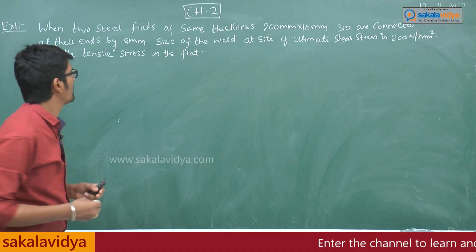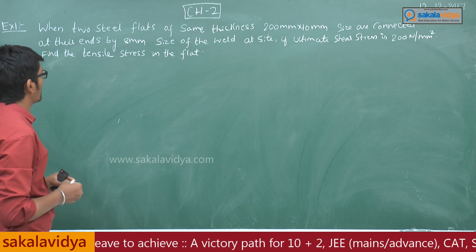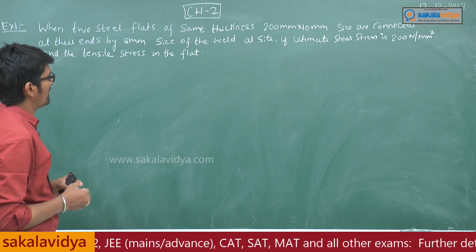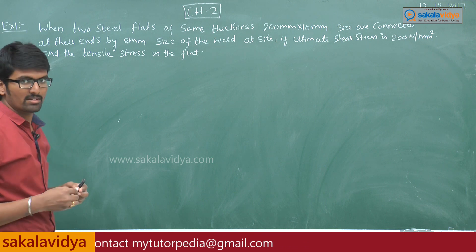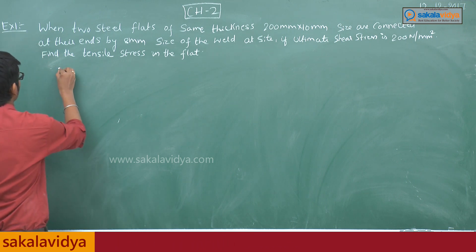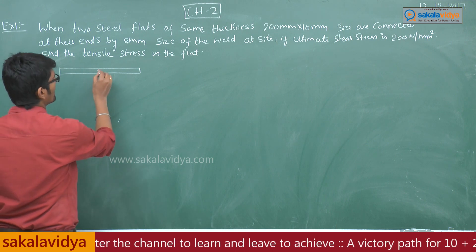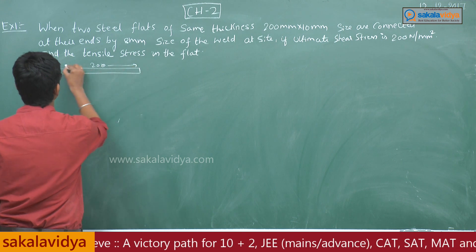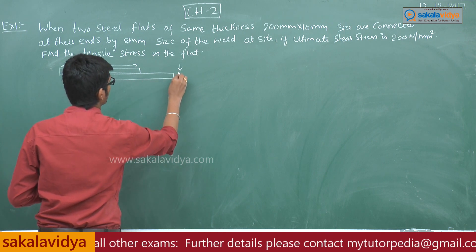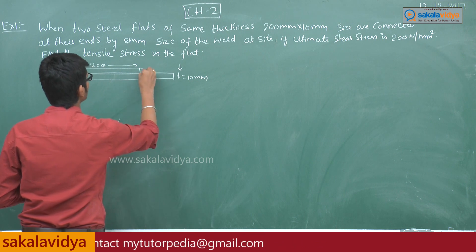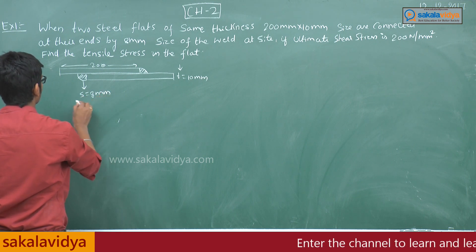Example number one: when two steel flats of the same thickness, 200mm × 10mm size, are connected at their ends by an 8mm size fillet weld on the side, and if the ultimate shear stress is 200 Newton per mm square, find the tensile stress in the flat. The weld size is 8mm.